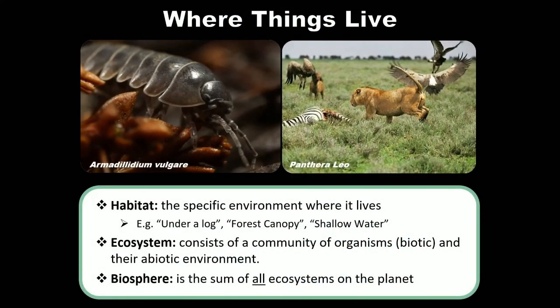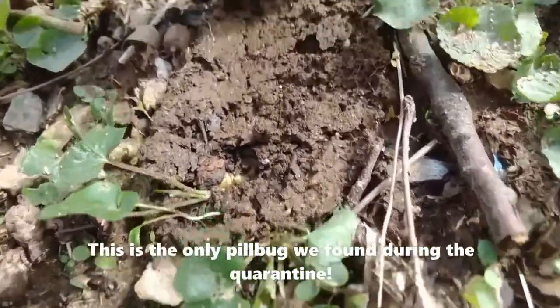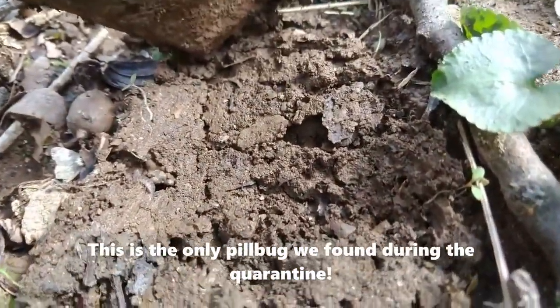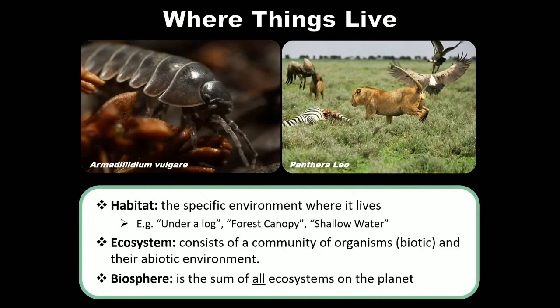The habitat of an organism is the specific environment where it lives. For example, under a log would be the specific habitat where you'd find a pill bug or a roly-poly. The forest canopy would be a really good place to find a bromeliad — that would be its habitat. Some frog species might show up in shallow water, and that would be their habitat. Habitat is a relatively narrow concept, a very small section of an ecosystem.